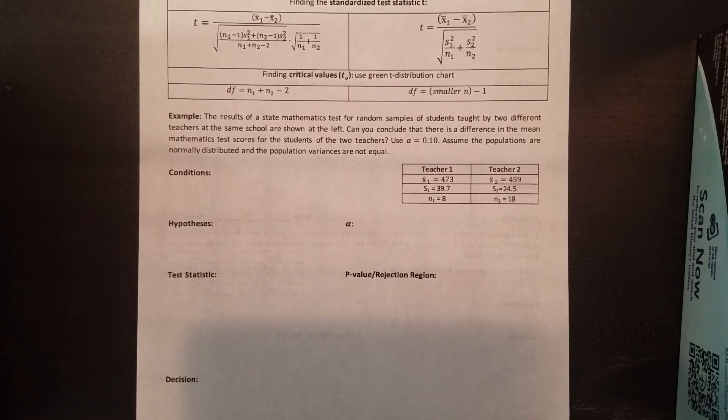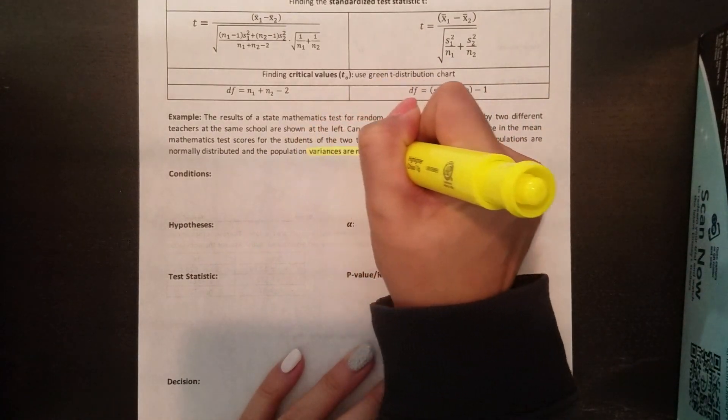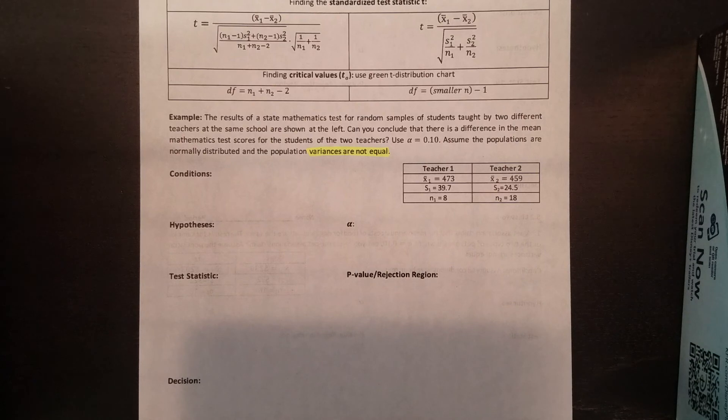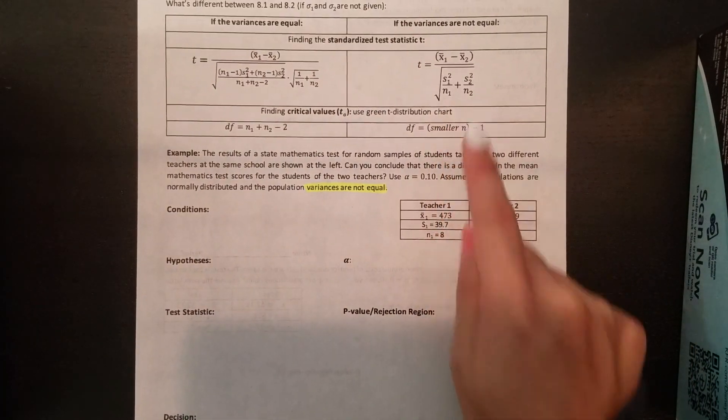For this example, we have the results of a state math test for random samples of students taught by two different teachers at the same school are shown at the left. Can you conclude that there is a difference in the mean math test scores for the students of the two teachers? Use alpha equals 0.10. Assume the populations are normally distributed and the population variances are not equal. So first, variances are not equal. This is a good thing. We get to use the not so crazy formula.